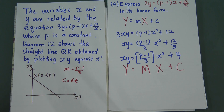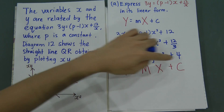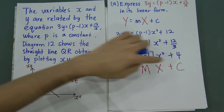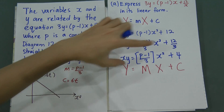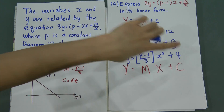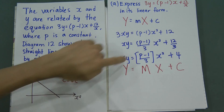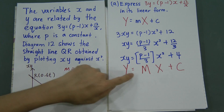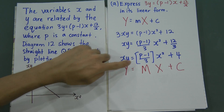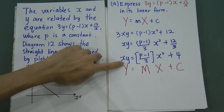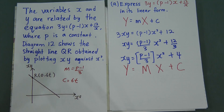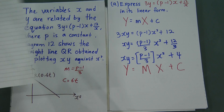This completes Part A — the equation is now in linear form. In the exam, you don't need to write out Y = mX + c explicitly; just rearrange to xy = (p−1)/3 · x² + 4 and you will get full marks.